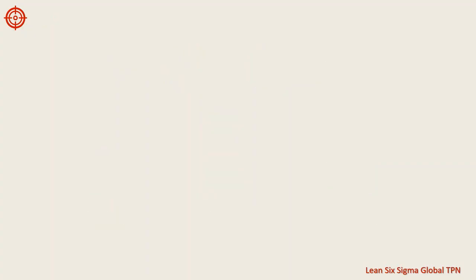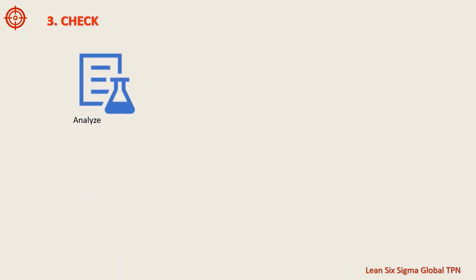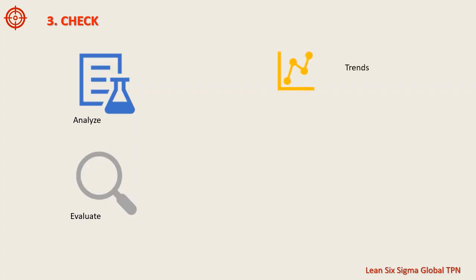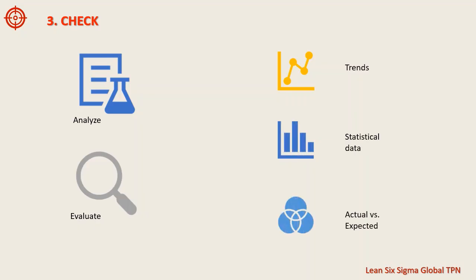The third step of the PDCA cycle is Check. In this step, you analyze the data collected during the Do step and evaluate the results against the original goal or objective. This could include identifying trends, analyzing statistical data, and comparing actual results to expected results.